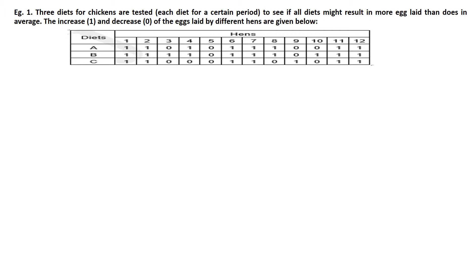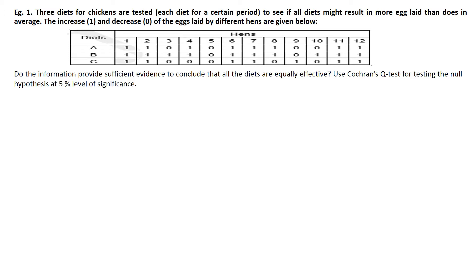We have already grouped the data. If you have any of these diets, you can see only one value. I am considering that a zero value is not of our interest. The question is whether the data provides sufficient evidence to conclude that all the diets are equally effective.